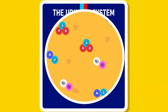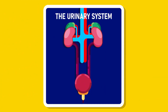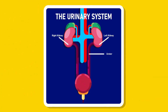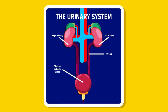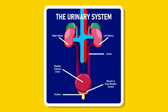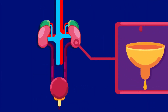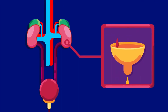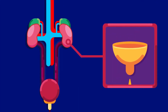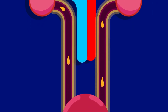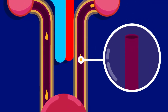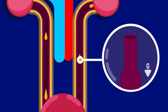The Urinary System. The human urinary system consists of the kidney, ureter, urinary bladder, sphincter muscle, and the urethra. The kidney filters blood and excretes the waste as urine. The ureter is the tube that transports urine from the kidney to the urinary bladder. It moves the urine through peristalsis and by gravity.